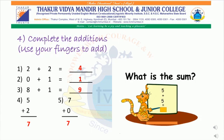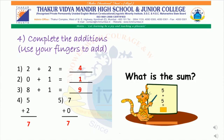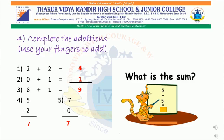Very good, students! Now, can you see a cute little tiger? The tiger wants to know the sum of five plus five. Let us all help him to count five plus five. Any guesses? Yes, the answer is number ten. Well done, students!